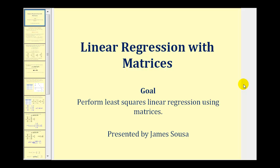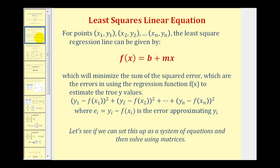Welcome to a lesson on performing least squares linear regression using matrices. Given a set of points, the least squares regression line is given by f(x) = b + mx, where b is the y-intercept and m is the slope. This line minimizes the sum of the squared errors — the errors in using the regression function f(x) to estimate the true y values.